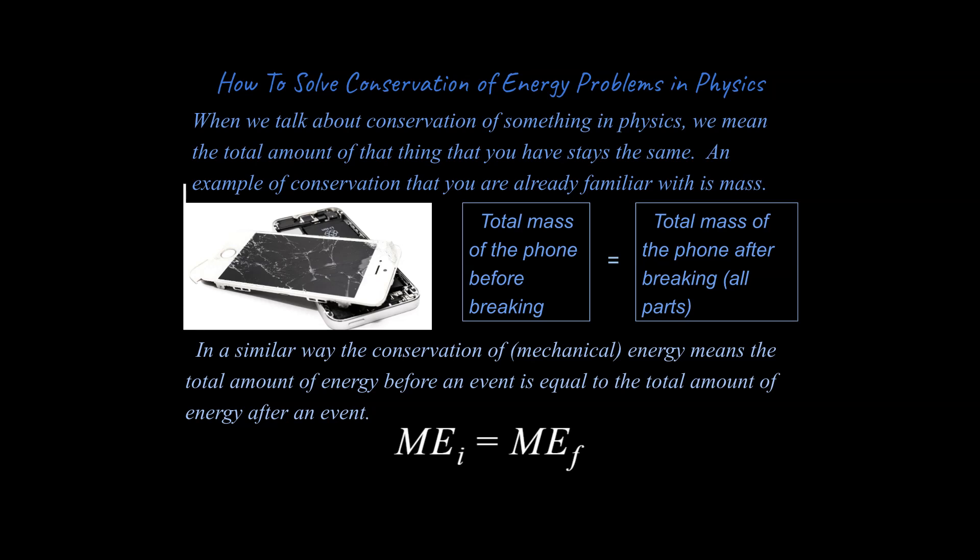And we're going to talk about this total energy as mechanical energy. So that means our total potential plus our total kinetic is going to be our total mechanical energy. So it's going to look like this. Your potential plus your kinetic initial is equal to your potential plus your kinetic final. And that's all it means.